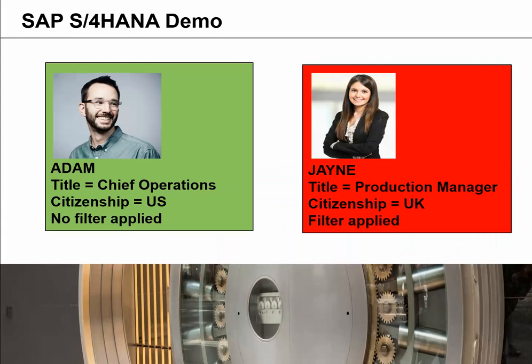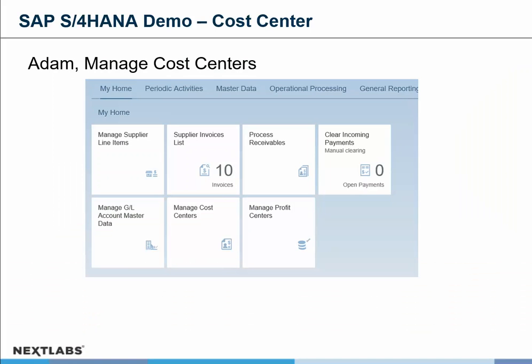The two users that we'll be using are Adam and Jane. Each have different titles and different citizenship. One has no filter applied to that particular individual, and the other one does. We're going to start with Adam, who does not have a filter applied.